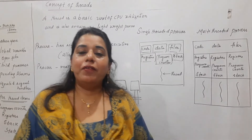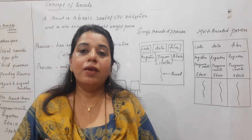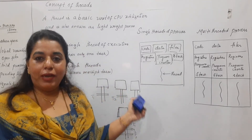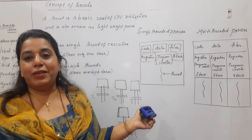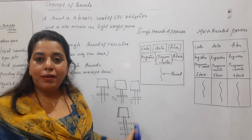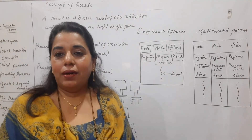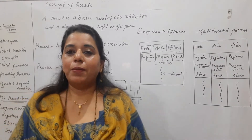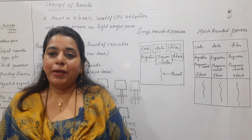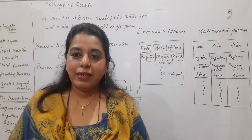And one more important difference: the third important difference is a process takes more time for creation and termination, whereas a thread takes less time for creation and termination. Similarly, you can compare this with more time to make one robot and less time to add an extra arm to an existing robot. With this example, hope the concept of process and thread is clear to you all. I'll explain all the differences between the process and threads in the next session.